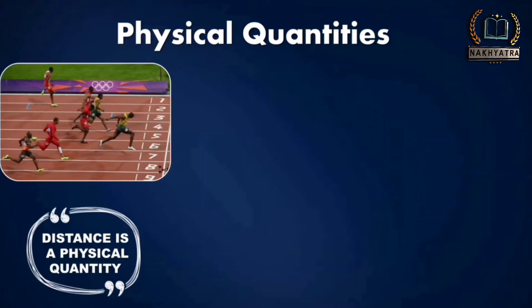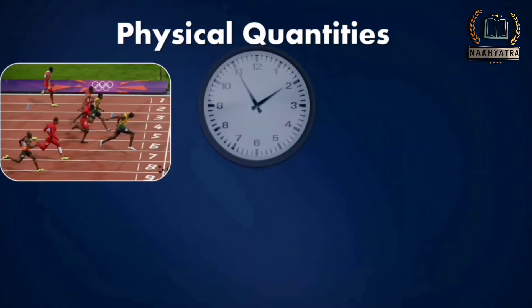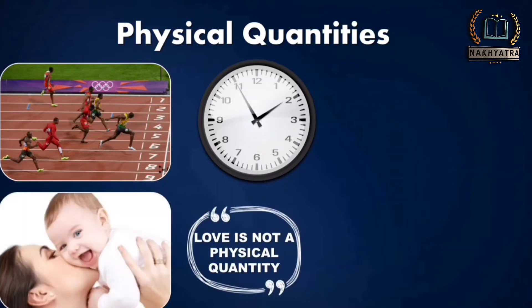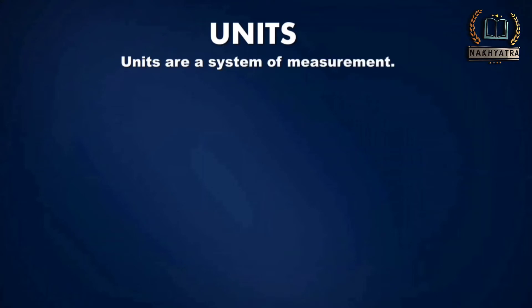For example, distance is a physical quantity and time is also a physical quantity — we can count and measure both, so these are physical quantities. But love is not a physical quantity because neither can we measure love nor can we count it.